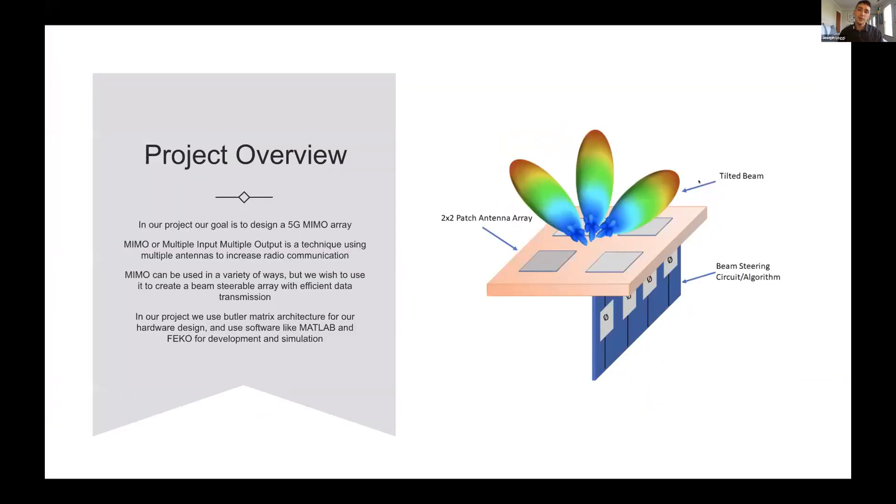We're going to talk about our project overview. In our project, we're designing a 5G MIMO antenna array. MIMO antenna means multiple input, multiple output. Each antenna is getting a different input and propagating its own output. As these antennas emit, we're going to use their different frequencies and waves to create these beams. Here in this overview picture, there's three beams and our goal is just to have one beam. This is just different scenarios of the beam being steered in different directions.